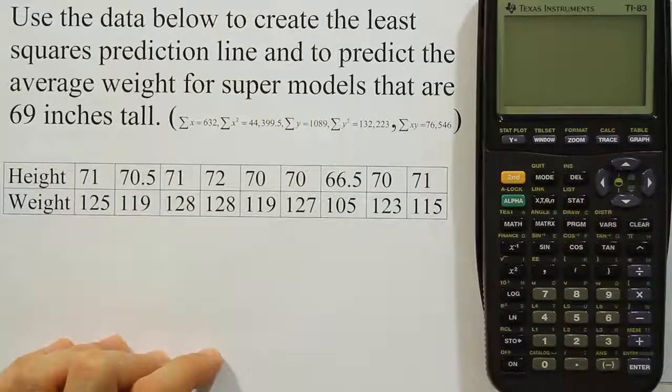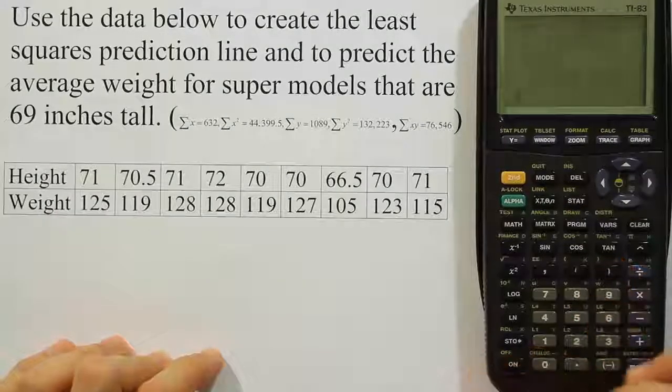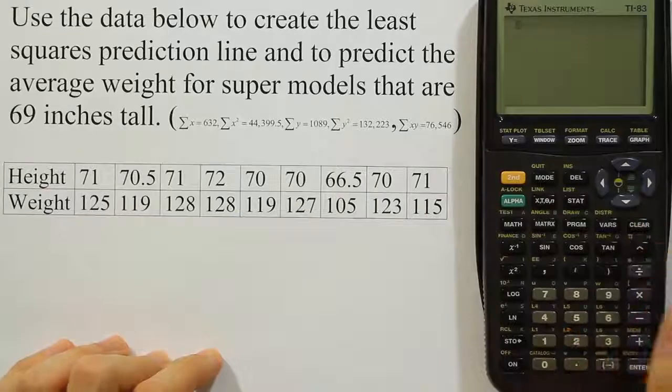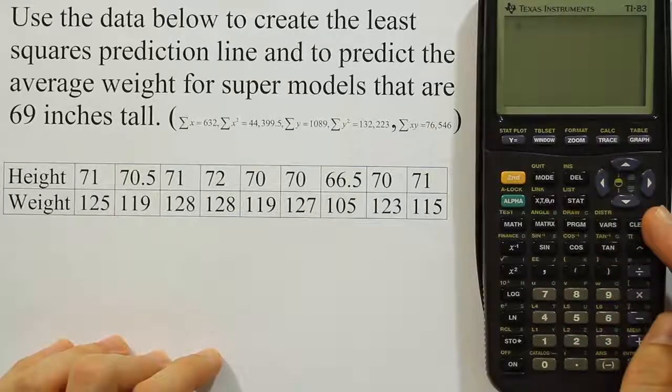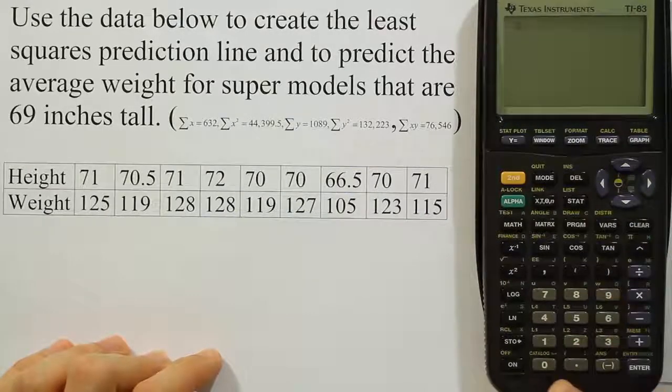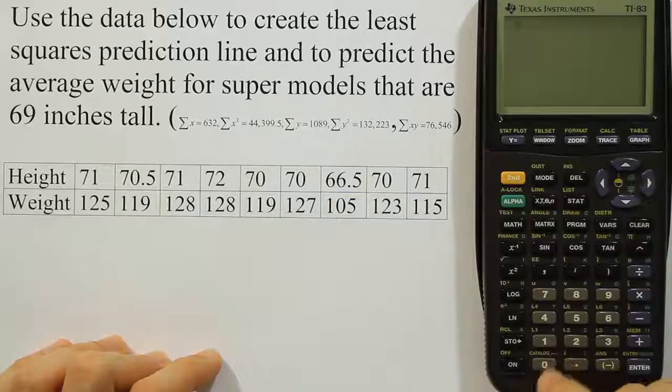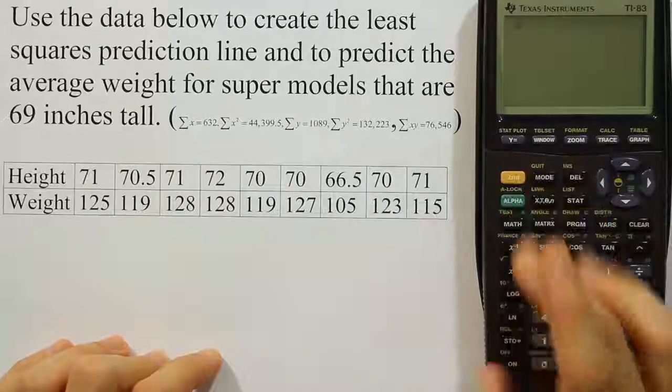So let's talk about one little detail first. Before we start this I want you to turn on your calculator and go under something called catalog in your calculator. In my calculator it's above the zero key, so I'm going to hit second and zero.